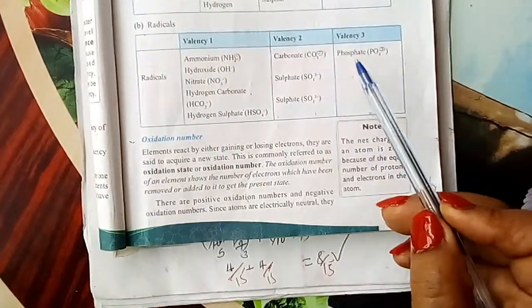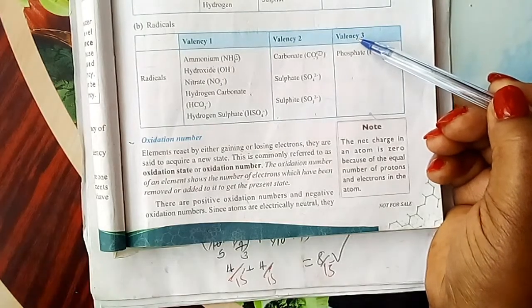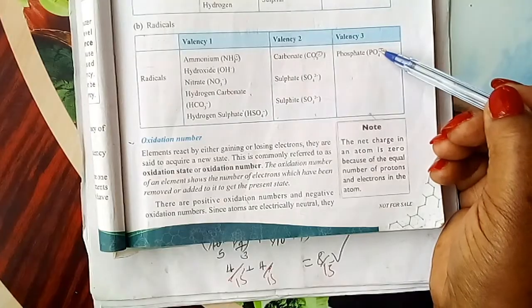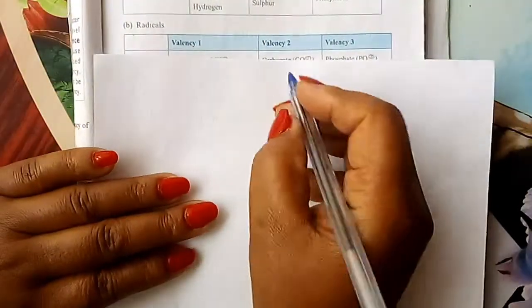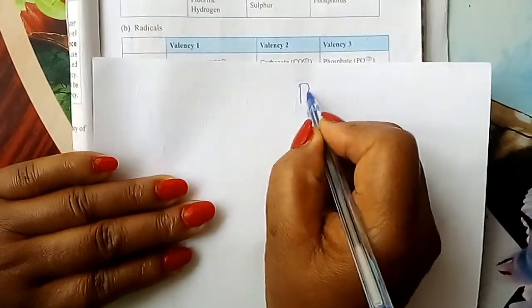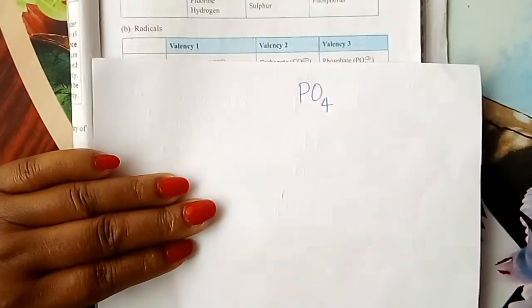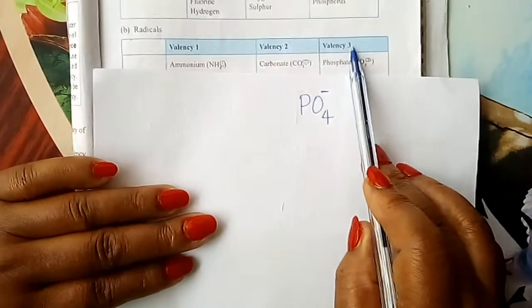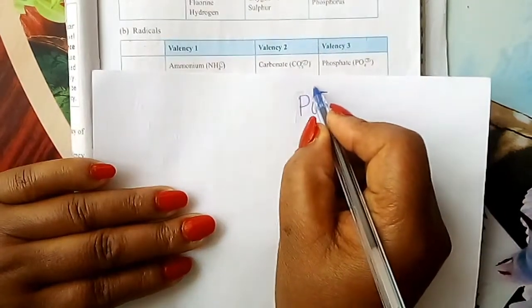Number two: the valency of each radical is equal to the charge. For example, phosphate — we have sung it as PO4. It is negatively charged and its valency is three. So you write it as PO4 three-negative. The valency equals the charge.